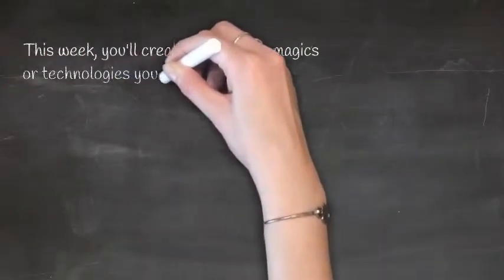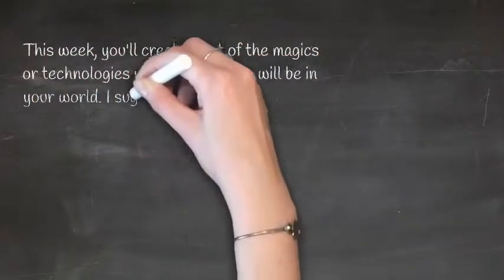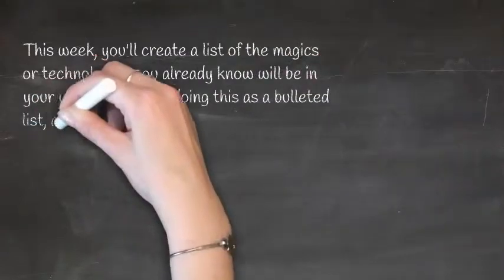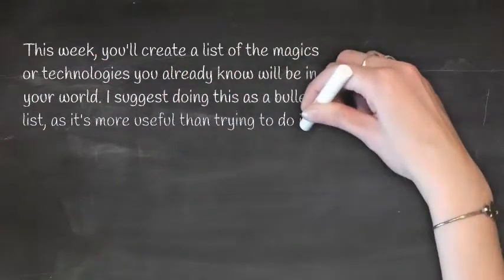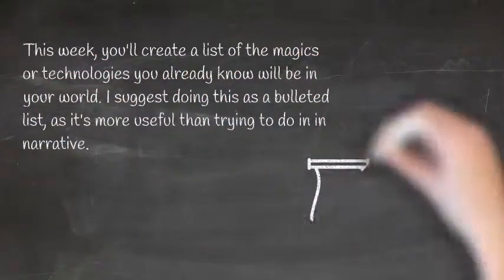This week, you'll create a list of magics or technologies you already know will be in your world. I suggest doing this as a bulleted list as it's more useful than trying to do it in narrative.